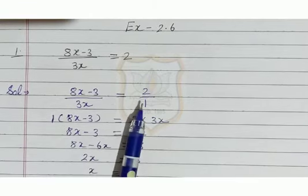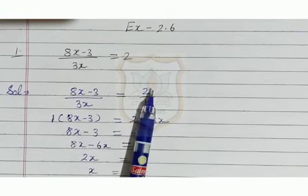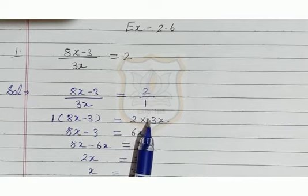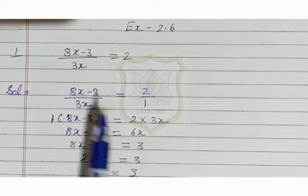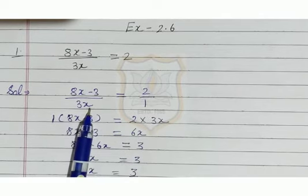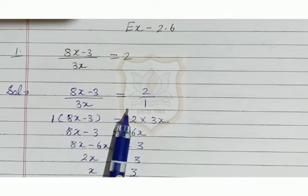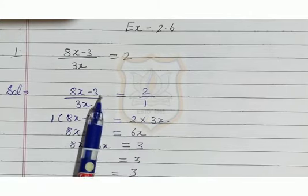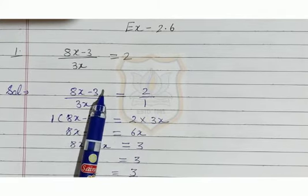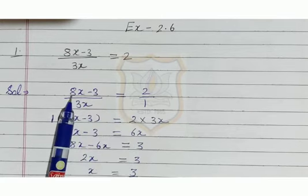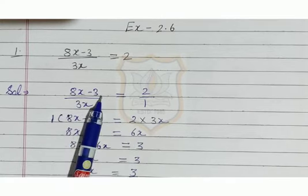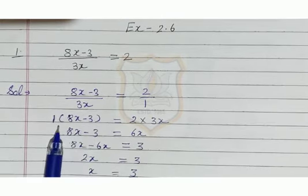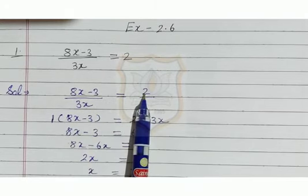We can write 2 as a rational number, so we will write it as 2 upon 1. So 8x minus 3 upon 3x is equal to 2 upon 1. Now we will use cross multiplication. We multiply 1 by 8x minus 3, and multiply 3 by 2.